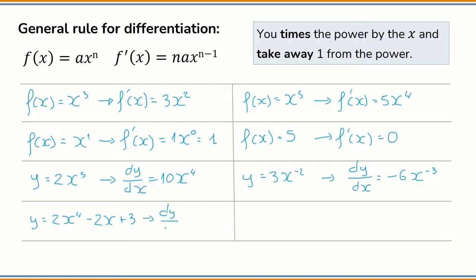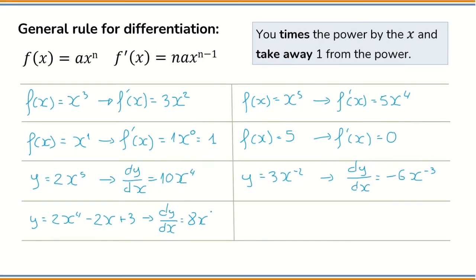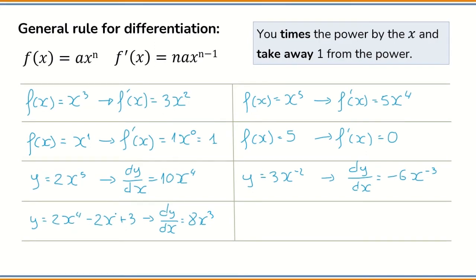y equals 2x to the power of minus 2 plus 3. We have a constant here, a number, and the derivative is 0. So this is the answer.